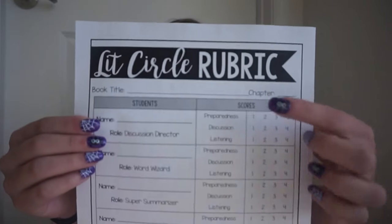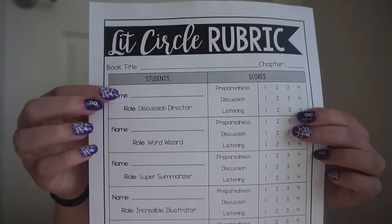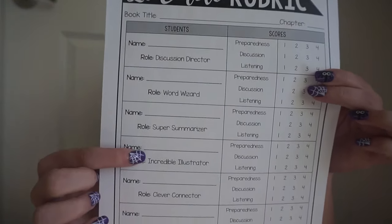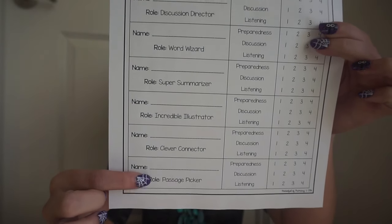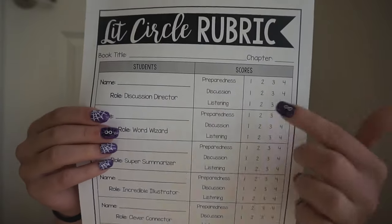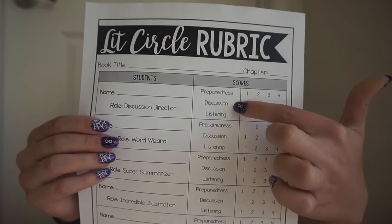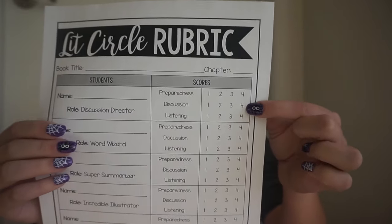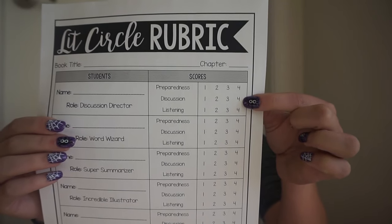If you use the individual rubric, you'd have a separate rubric for each student each week, which is a lot of papers and copies. So I also made one that has all group members on one page — you put the book title and chapter at the top, there's a spot for each student, and the roles are already filled in. This is available for six through eight students. The categories are preparedness, discussion, and listening, and you just circle their score of one, two, three, or four.